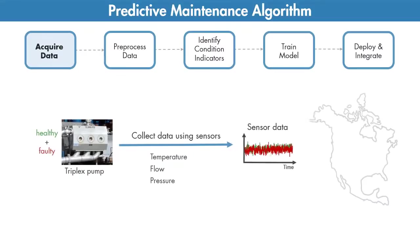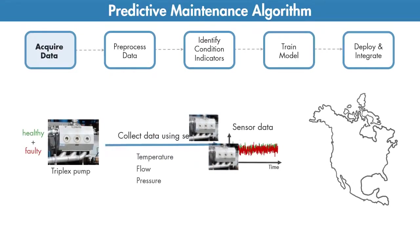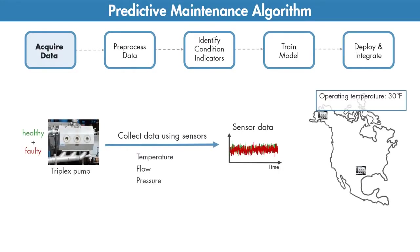For example, you may have the same pumps running in different places, one in Alaska and the other one in Texas. One may be pumping highly viscous fluid whereas the other one operates with a low viscosity fluid. Although you have the same type of pumps, one may fail sooner than the other due to these different operating conditions. Capturing all this data will help you develop a robust algorithm that can better detect faults.